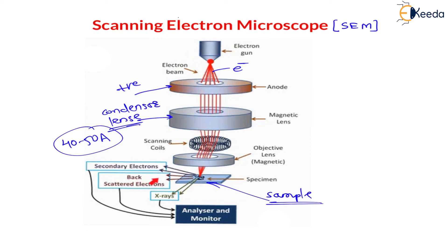All three — secondary electrons, backscattered electrons, and X-rays — are sent to the analyzer, where their intensity is analyzed. The analyzer then sends the signal to the monitor, where you get an enlarged or magnified image of the specimen. My dear students, please pause the video and write all these points, because in the examination only a diagram will not give you full marks — you need to explain each procedure. I have already written all important key points on screen.